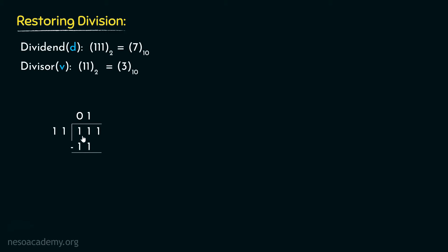Subtracting 11 from 11 results in nothing. However, we are entitled to use the next bit, so let's bring it down. This is 1 bit and we can't really divide 1 bit using 2 bits, so we will place 0 in the quotient. If we divide 7 using 3, we get 1 as the remainder and 2 — that is 010 — as the quotient.